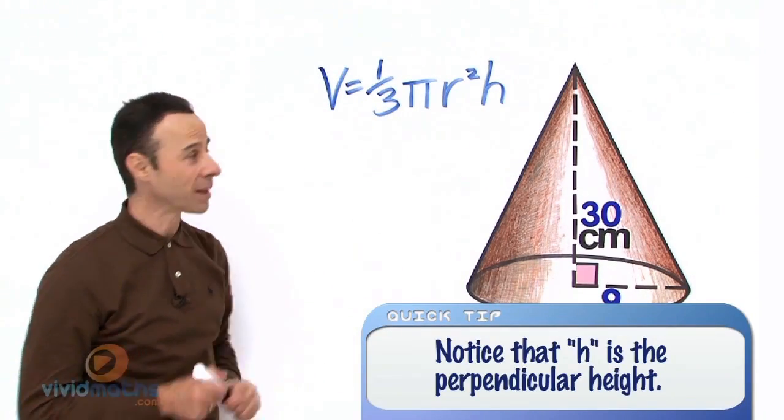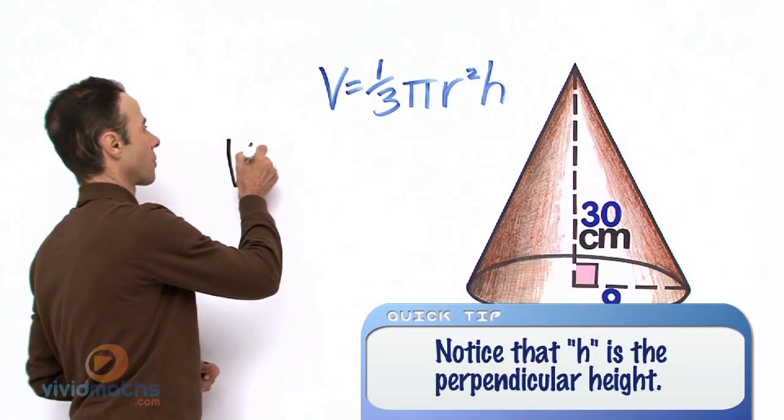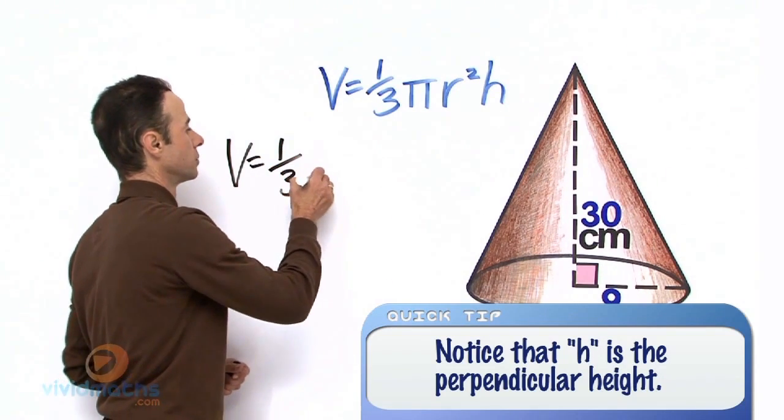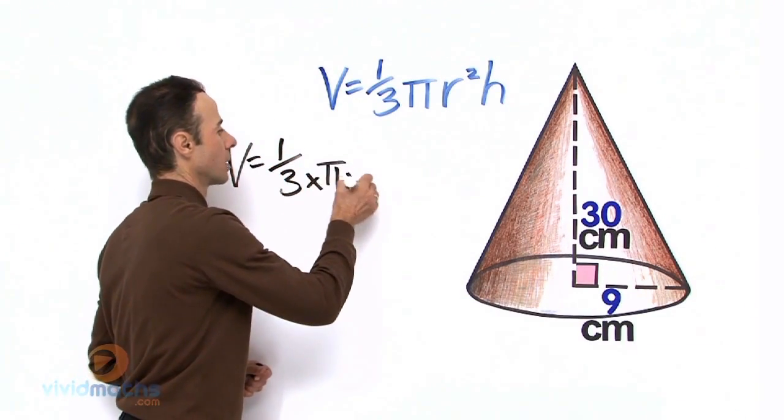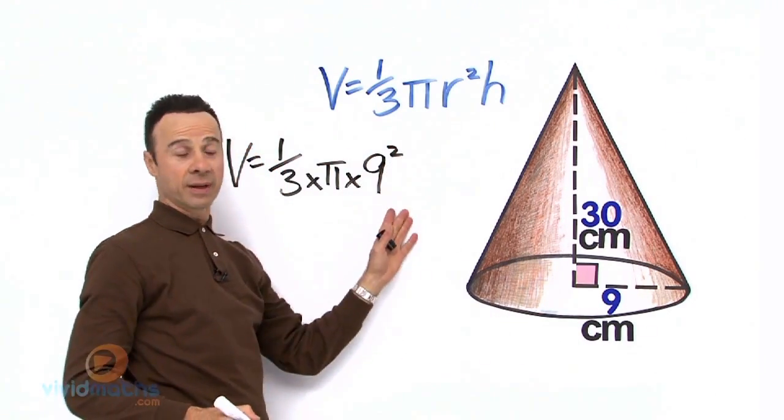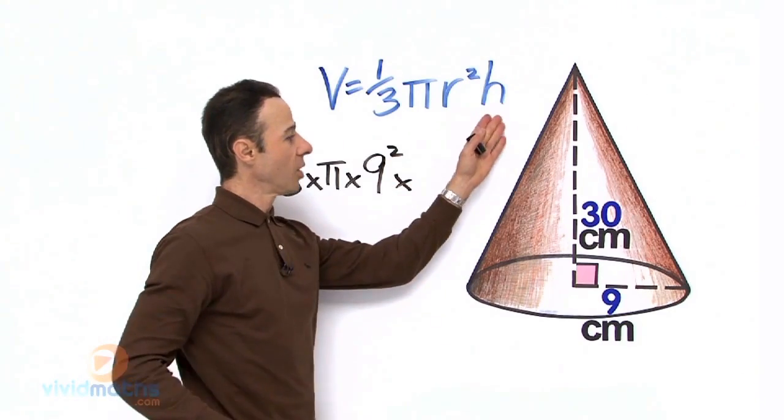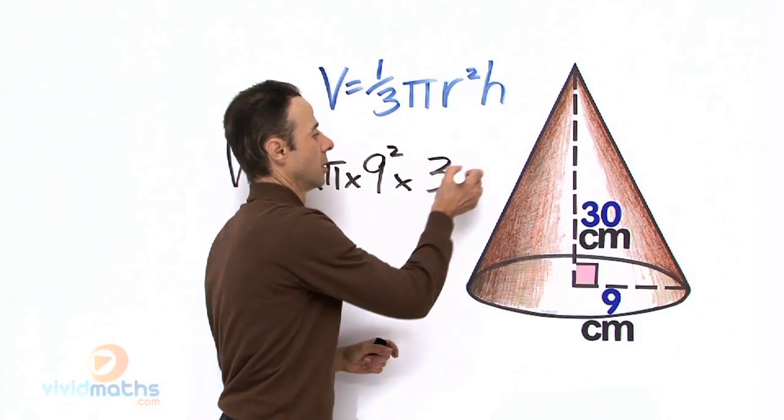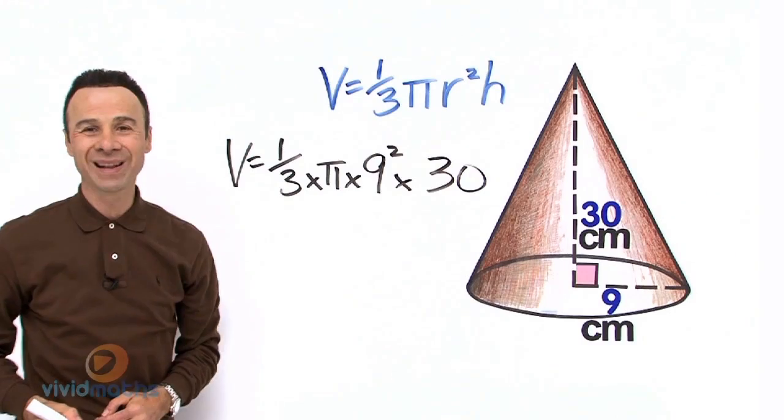Let's drag and drop them into the formula. There is our radius, 9, and of course remember to square it, and the height, 30. Let's plug them into the calculator.